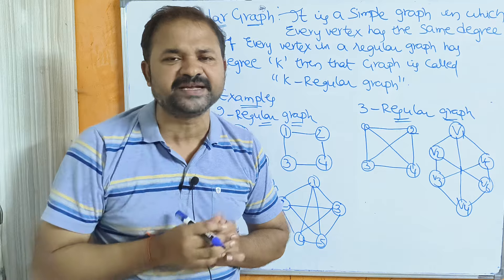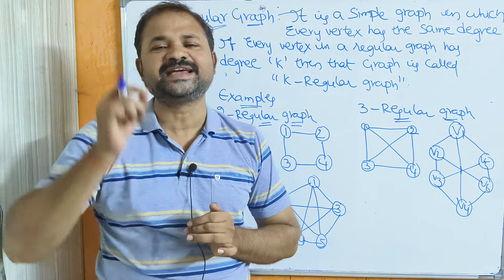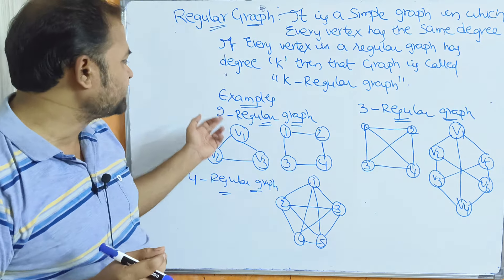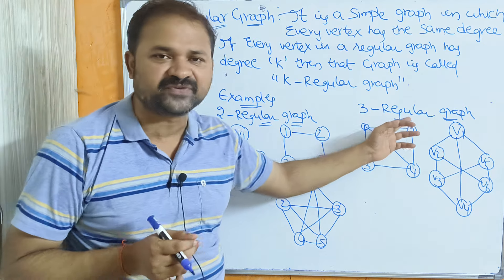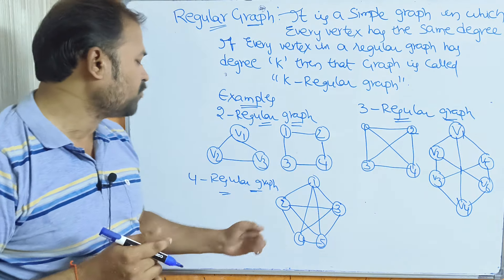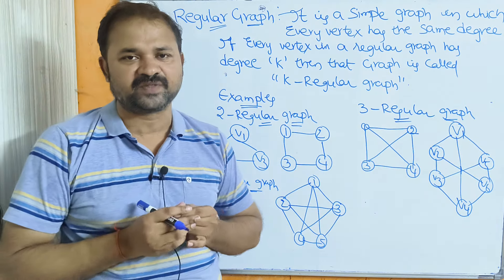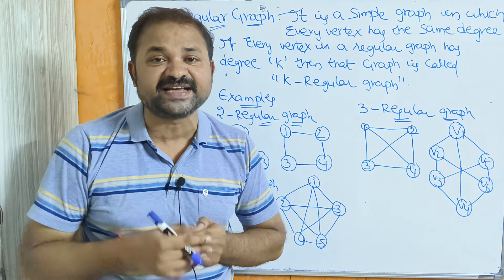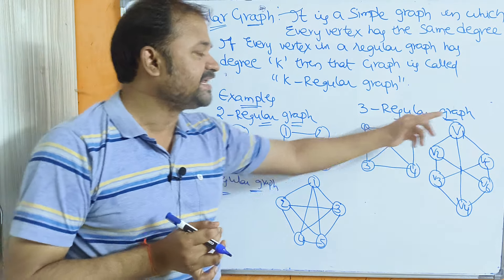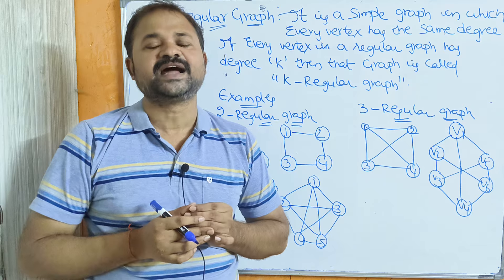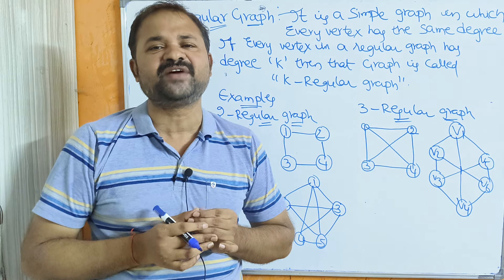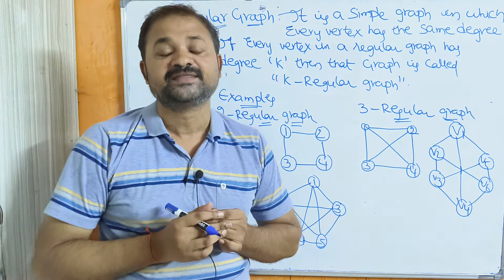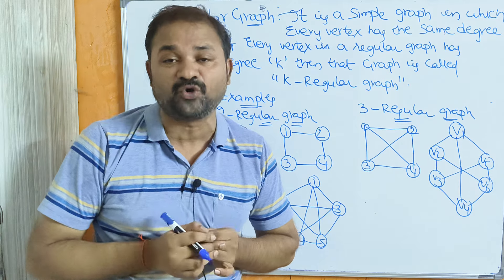A k-regular graph means the degree of every vertex is k. For example, a 2-regular graph means the degree of every vertex is 2, a 3-regular graph means the degree of every vertex is 3, and a 4-regular graph means the degree of every vertex is 4.